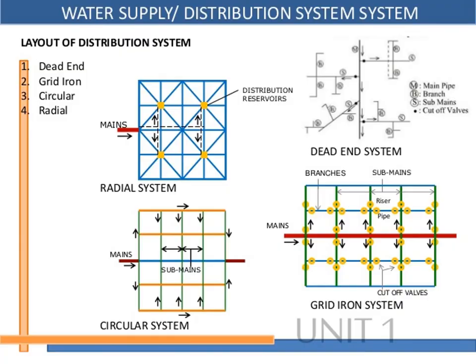The four types of water distribution systems are named according to the geometrical pattern in which the water supply pipelines are laid. For more clarity, please feel free to replay the video.